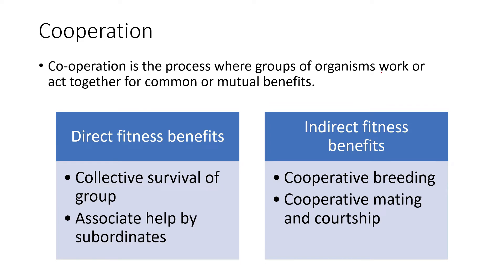An example of indirect benefits is cooperative breeding, where an organism, even after reaching maturity, stays in the same family but suppresses its reproductive ability and helps the dominant group to breed. The organism is actually getting better resources by suppressing its reproductive capacity, so some way or another it is getting benefits. There is also cooperative mating and courtship, where multiple males try to court a particular female but only one dominant male actually mates, while all others help in the courtship. This is prominent in birds and a few other species.